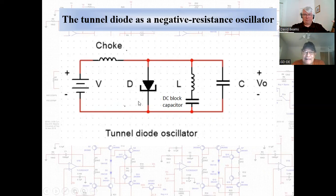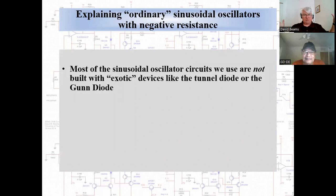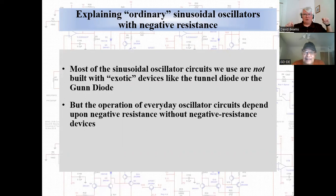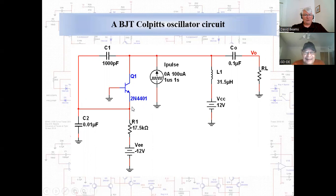Ordinary sinusoidal oscillators like the ones we studied for our license exam — you can analyze them with negative resistance. Most sinusoidal oscillators we run into aren't built with tunnel diodes or gun diodes, but everyday oscillators depend upon negative resistance. They don't use negative resistance elements — they have active circuits that synthesize negative resistance, making them behave as if they were negative resistors. Do you recognize this one? Of course — the title gives it away — this is a Colpitts oscillator.